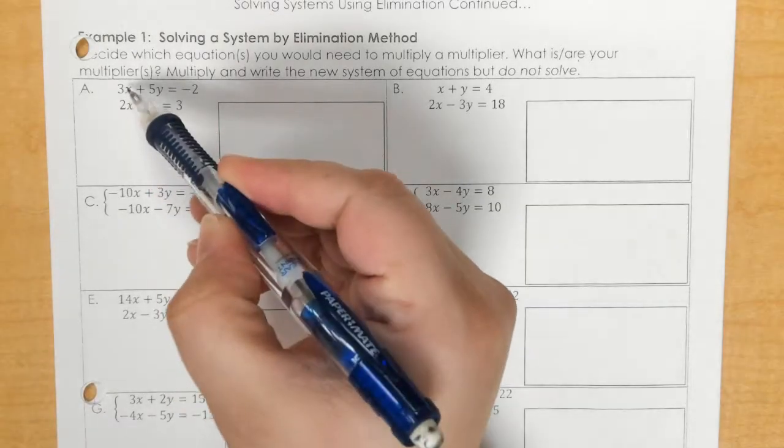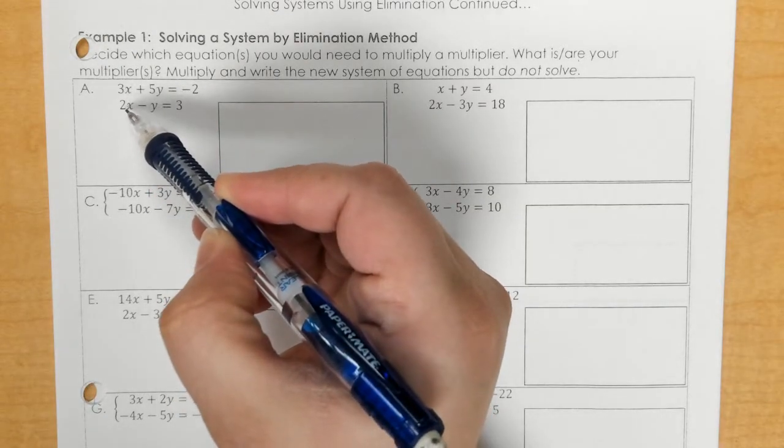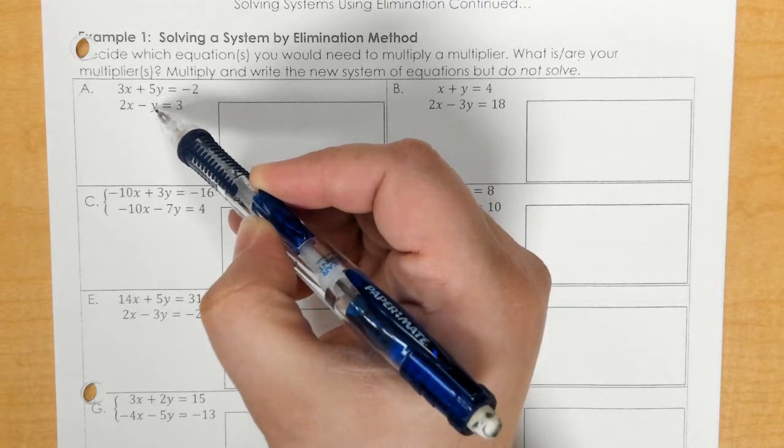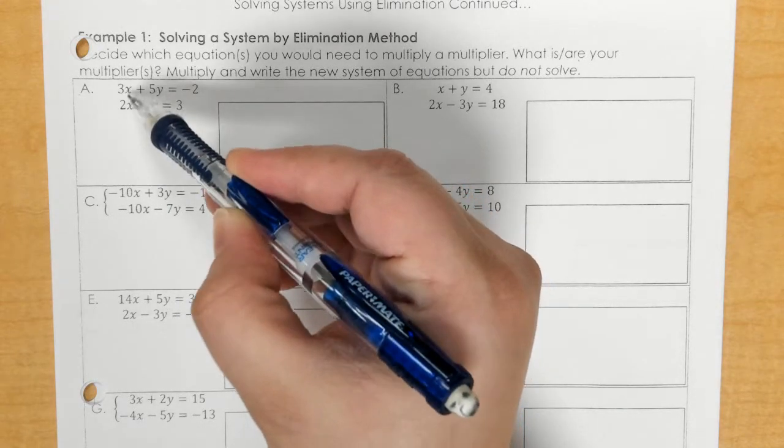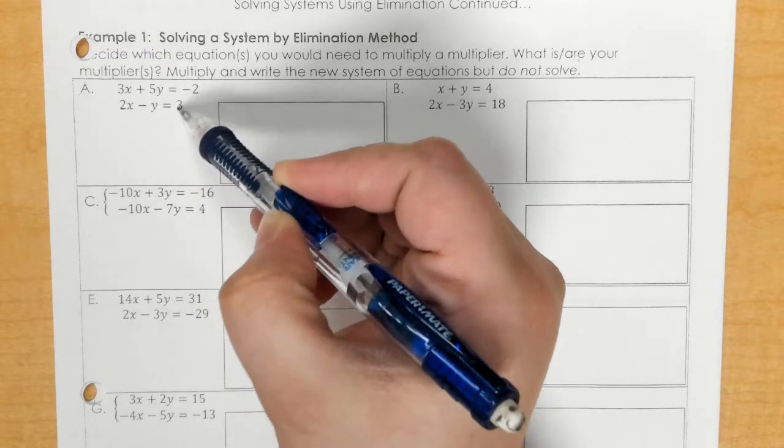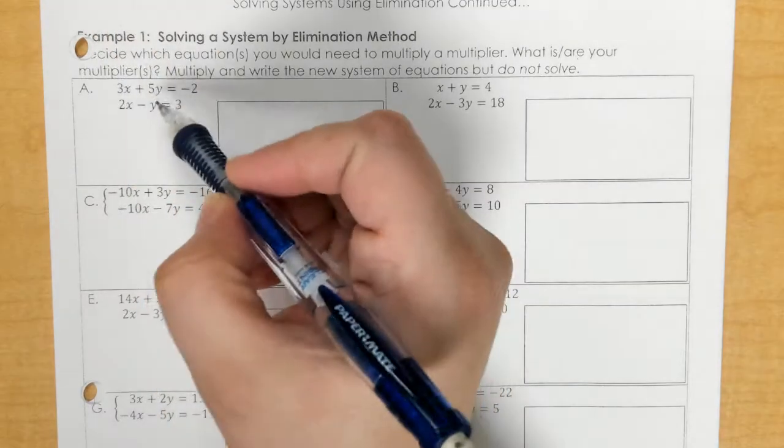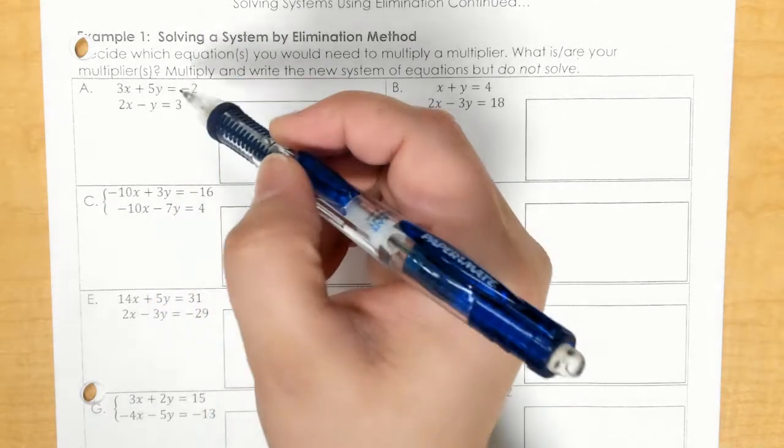First of all I would look to see can I cancel these out? No. Can I cancel these out? No. They would make 4, that would make 5. These are not x or y so I don't care about these right now. So my question is how do I make opposites here?